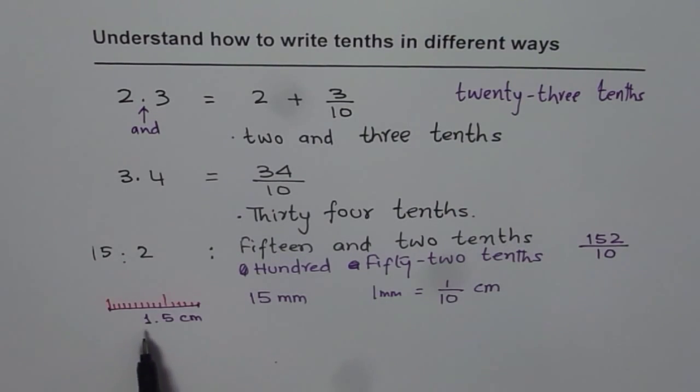And the application is: 1.5 centimeters could be written as 15 millimeters, since 1 millimeter is 1 tenth of a centimeter. I hope that helps you understand how to write tenths in different ways. We'll explore more in coming videos. Thank you and all the best.